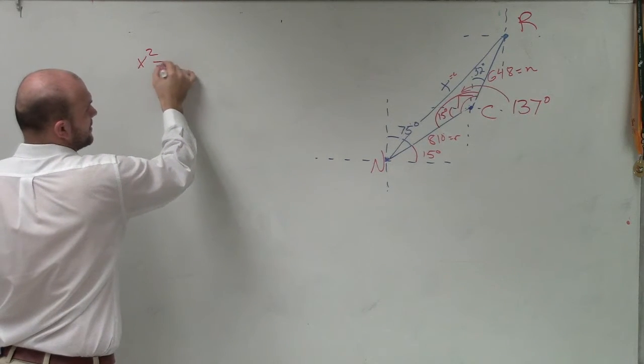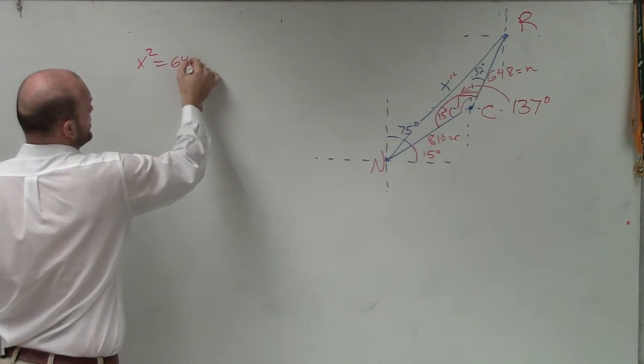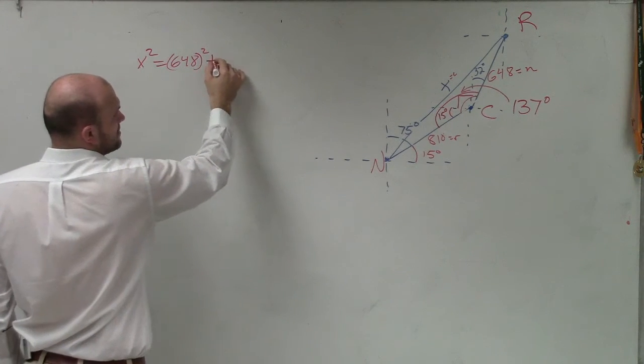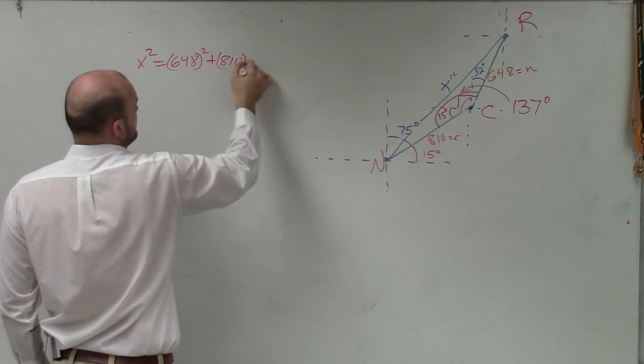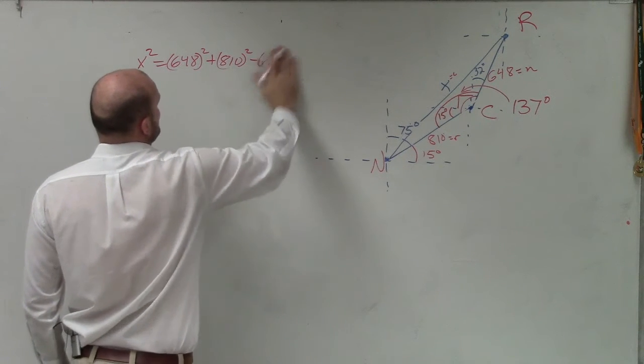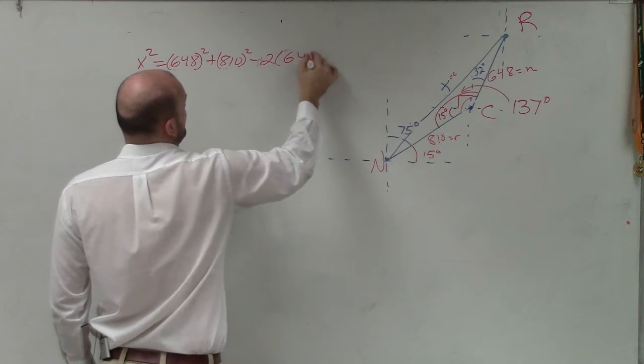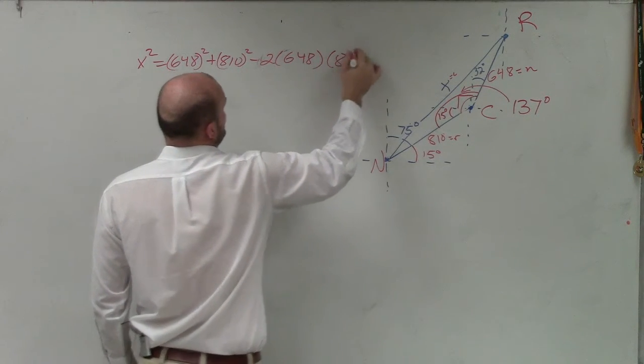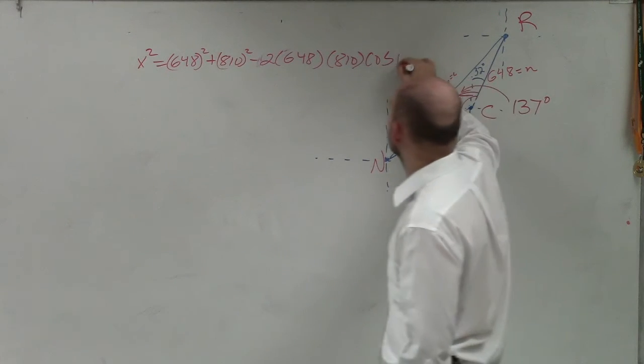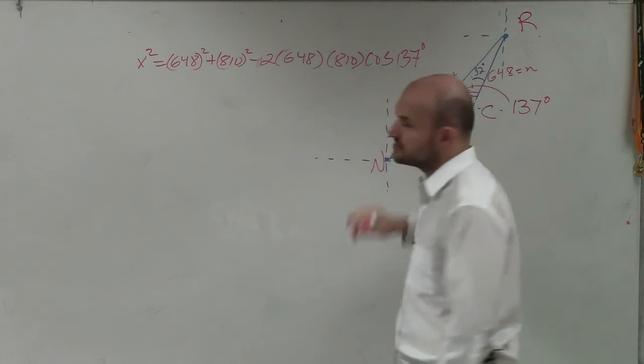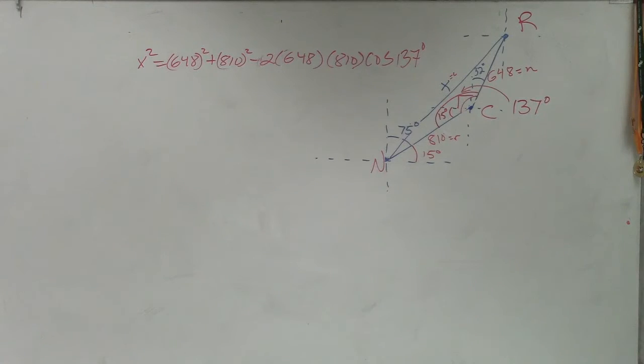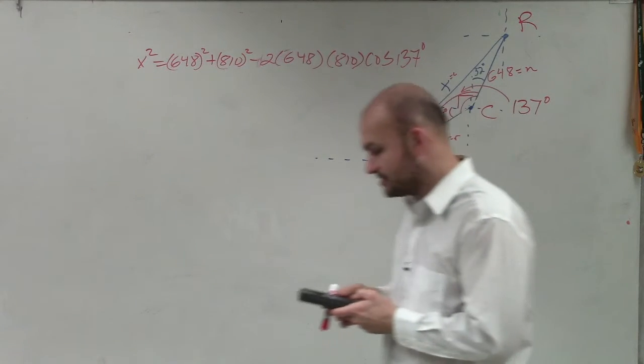Which we'll see that x squared equals 648 squared plus 810 squared minus 2 times 648 times 810 times the cosine of 137. Does everybody see how I plug those into my calculator? Now, I can just go ahead and finish this off.